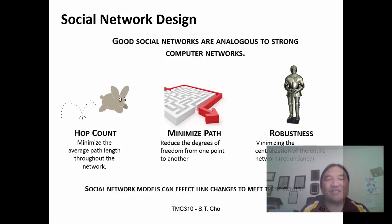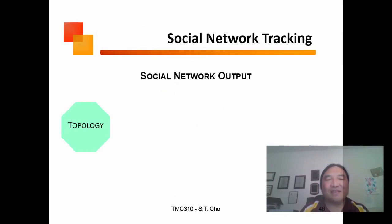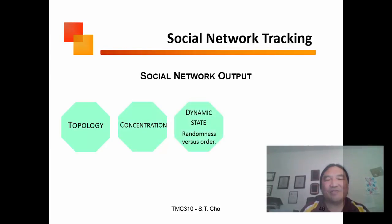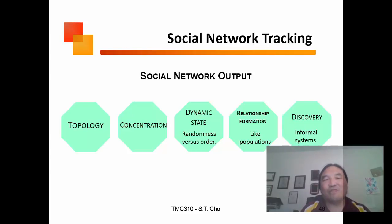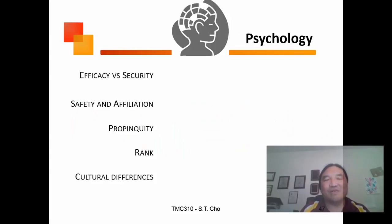If one key influencer decides to say something negative about me, is that going to take the whole network down? In terms of your social network output, it's about topology, how they're concentrated, how dynamic they are, how they form relationships, and how difficult it is to discover new things.